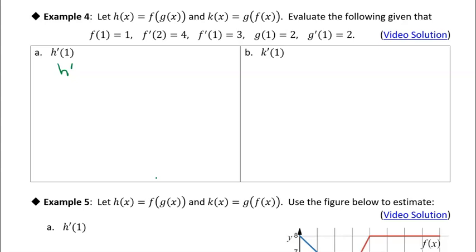h'(x) is going to be the derivative of the outside function, f'(x), and we leave the inside function as g of x, and then we've got to multiply that times the derivative of the inside function, g'(x).